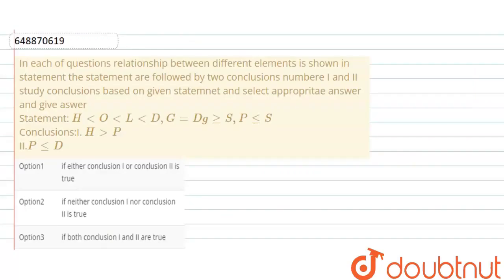Welcome to Doubtnut. Our question is: Relationship between different elements is shown in the statement. The statements are followed by two conclusions, number first and second. Study conclusions based on the given statement and select the appropriate answer. The statement is given and the conclusion is given.